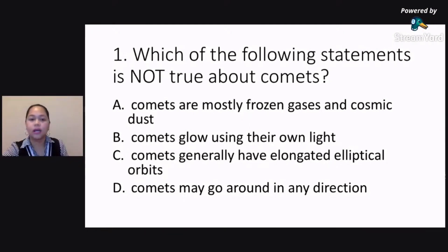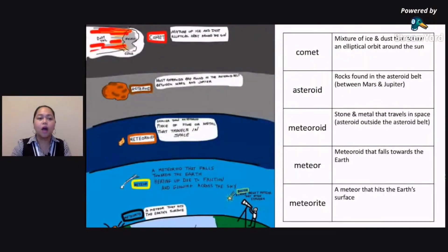So again, our question is, which of the following statements is not true about comets? Alin dito ang hindi tama about sa ating kometa? Is it comets are mostly frozen gases and cosmic dust? Letter B, comets glow using their own light. Letter C, comets generally have elongated elliptical orbits. Letter D, comets may go around in any direction.